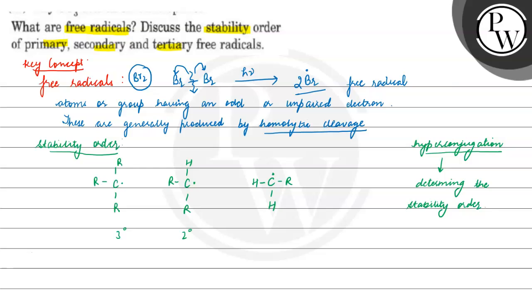the more alkyl groups present, the more stable the radical. Three degree carbons have three alkyl groups. Secondary have two alkyl groups. Primary has only one alkyl group.